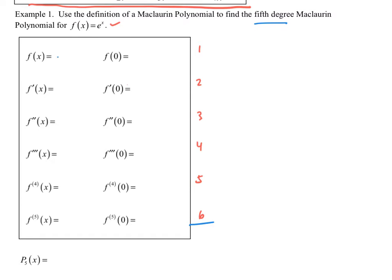I write down f of x, f prime of x — this is going to be the same all the way down because the derivative of e to the x is e to the x. Then f of 0 gives me 1, and f prime of 0 also gives me 1. I'm going to get 1s all the way down as well.